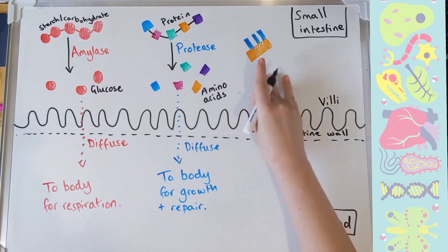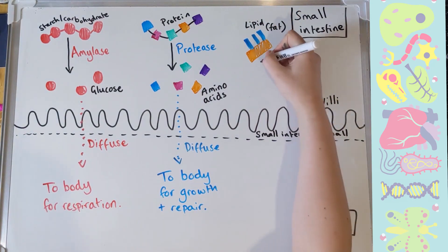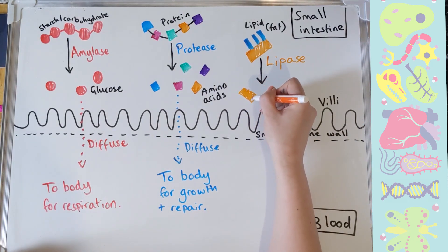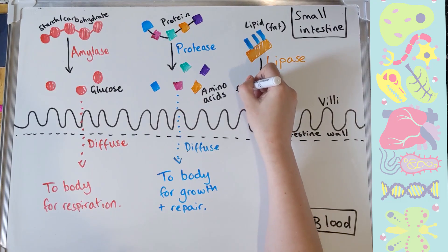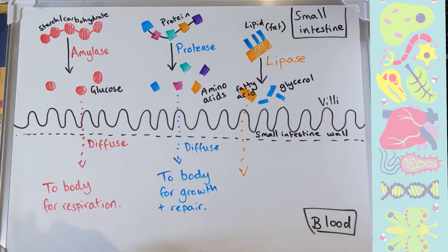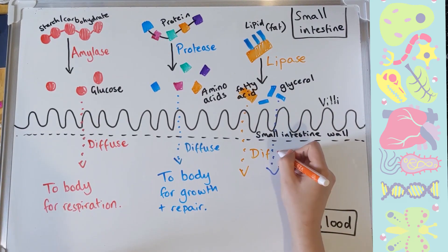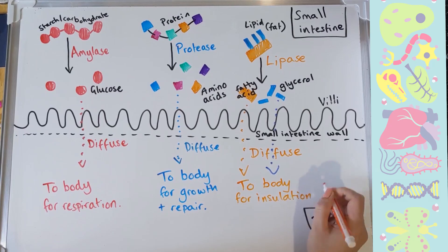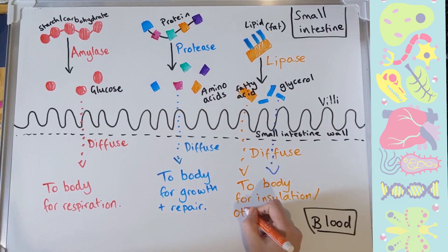Lipids or fats are broken down by their own enzyme called lipase. This breaks the fat into two parts, fatty acid and glycerol. You need to know both of them. Those can then diffuse into the blood and then go off to the body. Fats are often used for insulation, long-term energy stores, and lots of other things as well.